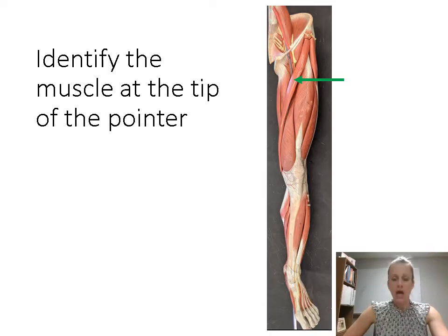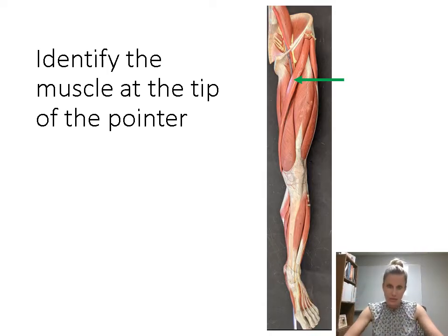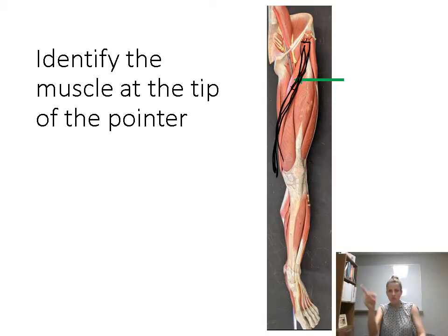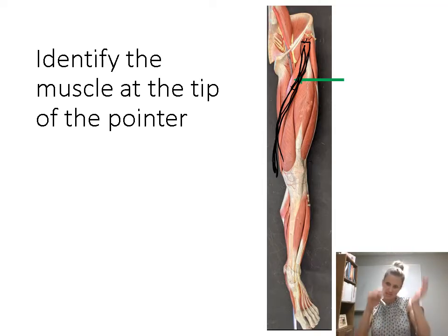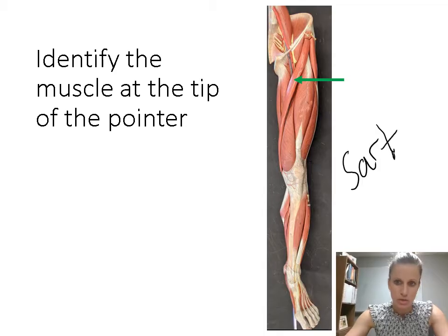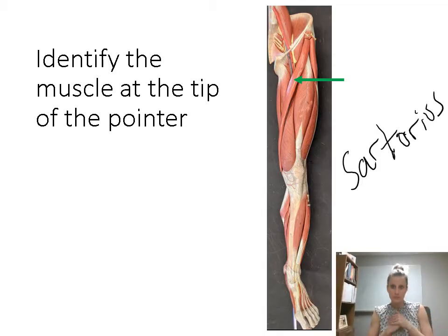This is a superficial, ribbon-like muscle that wraps around the thigh. It starts in the front of the thigh and wraps around the medial side. It's a really long ribbon and the name of the muscle is kind of long too — this muscle is called sartorius. So sartorius would be the answer to this question.